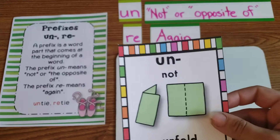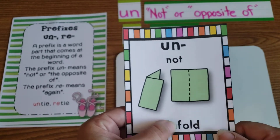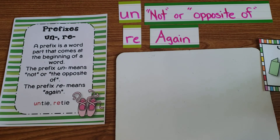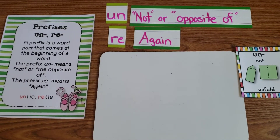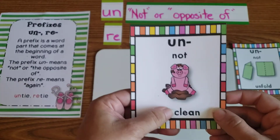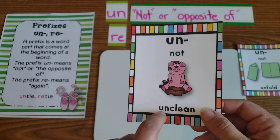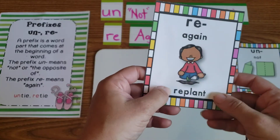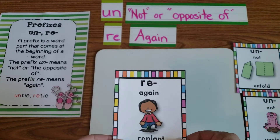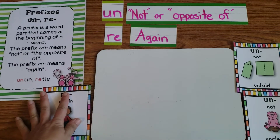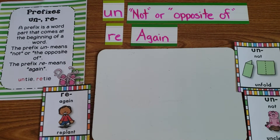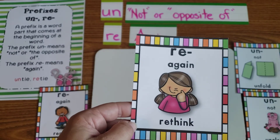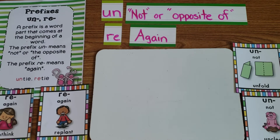Here are some more examples. We have the word 'fold,' and if we add 'un,' it means we're going to do the opposite of folding — we're going to unfold it. We also have 'clean' and 'unclean.' This pig is not clean; he's the opposite of clean, he's unclean. Then with 'plant': he planted, and then he replanted — he planted it again. And when you have to rethink something, you need to think about it again. So 're' means again, and 'un' means not or the opposite of.